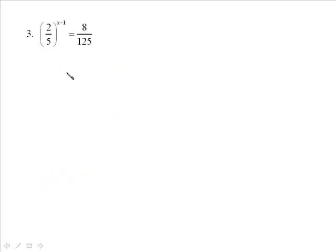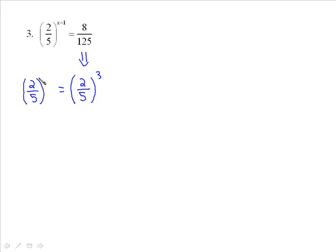Another example with a fractional base: (2/5) to the (x minus 1) equals 8 over 125. Looking at the right side, 8 over 125 can be written as (2/5) to the exponent of 3, since 2 cubed is 8 and 5 cubed is 125. It doesn't matter what your base is as long as it's the same on both sides. So we drop the bases and get x minus 1 is equal to 3, giving us x is equal to 4.